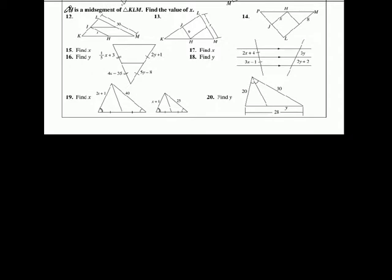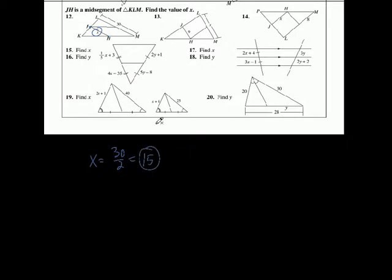Let's try number 12. Midsegment. What do we know about the midsegment of a triangle? The midsegment JH hits the midpoint of the two opposite sides. The midsegment is parallel to the third side, but more importantly here, it's equal to half of the third side. This is X and this is 30. The midsegment is half of the third side, so if the third side is 30, then X is 30 divided by 2, which is 15. For these problems, all you've got to do is solve for X.